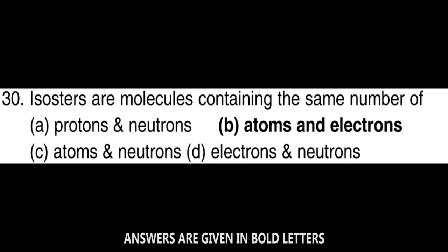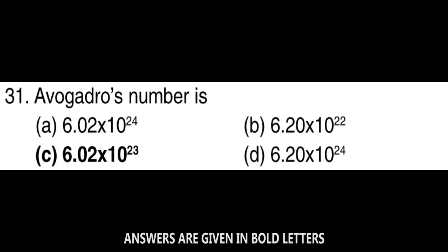Next question: Isoelectronic species are molecules containing the same number of atoms and electrons. Next question: Avogadro's number is 6.022 × 10²³.